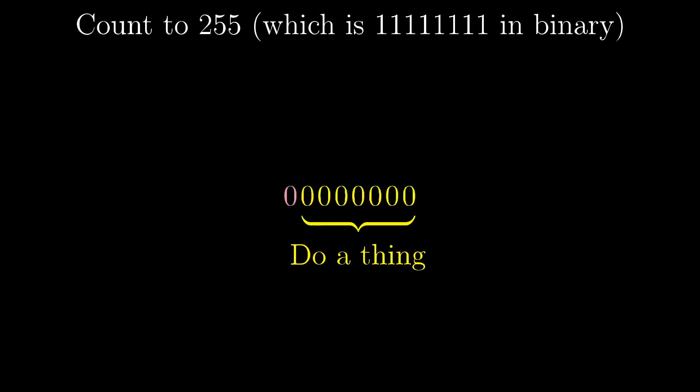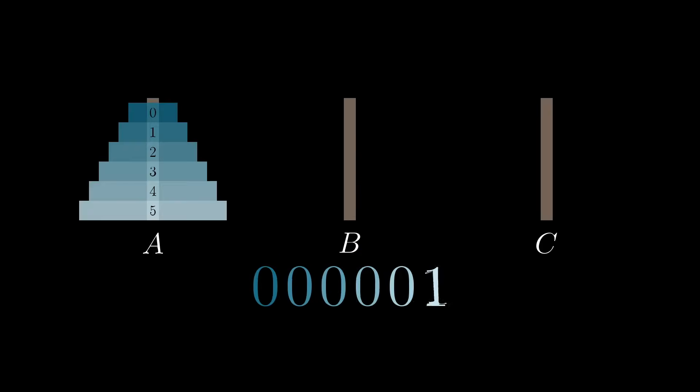Counting up to 255, which is 8 successive 1's, this looks like letting the last 7 bits count up till they're full, rolling over to the 128's place, then letting the last 7 bits count up again.